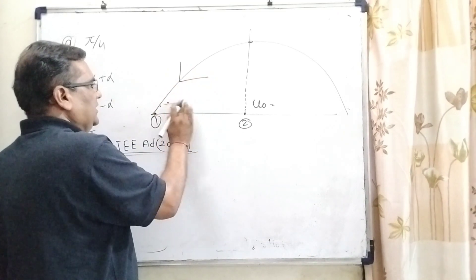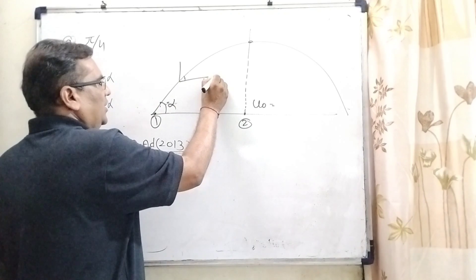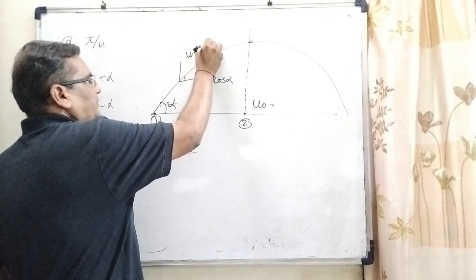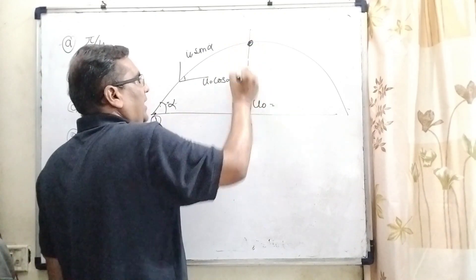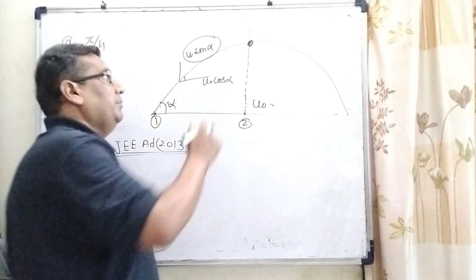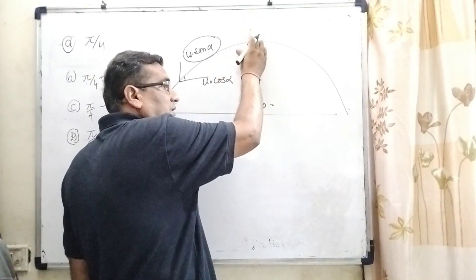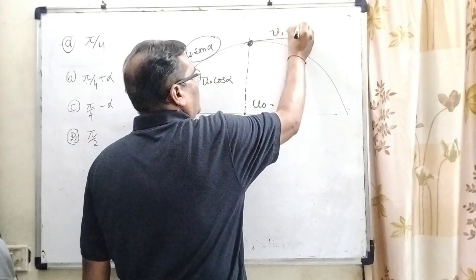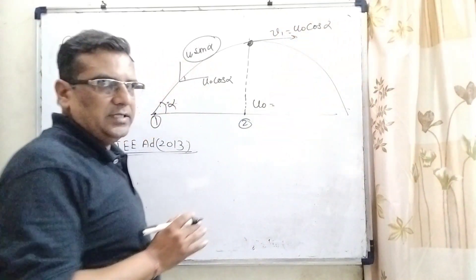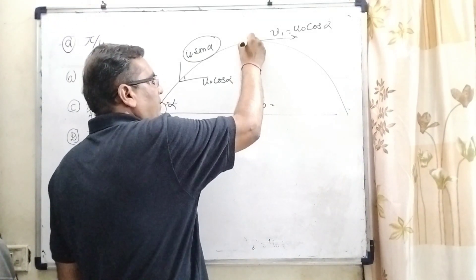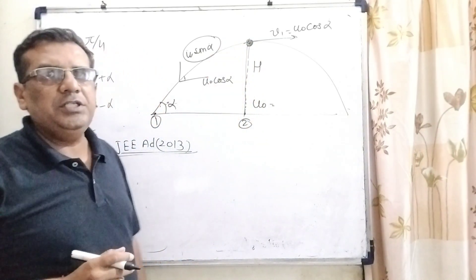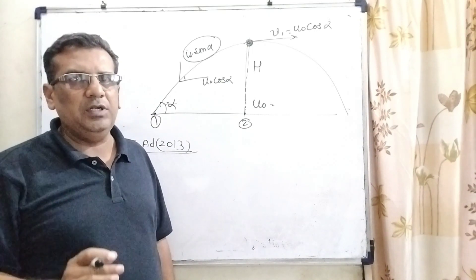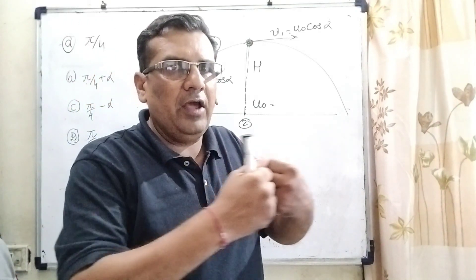The angle given is alpha, so the initial velocity is u0 at angle alpha. Its vertical component is u0 sin alpha. But at maximum height, the sin alpha component becomes zero, because at maximum height no component is acting in the upward direction. So the velocity of the first particle at maximum height is v1 equal to u0 cos alpha, acting in the x direction. At the moment of maximum height, both particles collide, and the collision is perfectly inelastic.